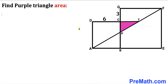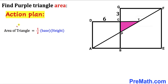Let's get started. Here's our action plan: since we are interested in calculating the area of this purple shaded triangle, let's recall the area of a triangle formula — area equals one half times base times height. In our case, CT is the base of this triangle whereas CP is the height. So our task is to calculate side length CT and side length CP.